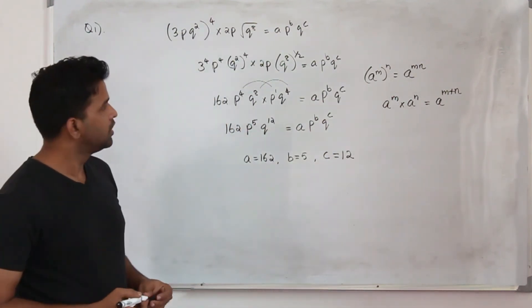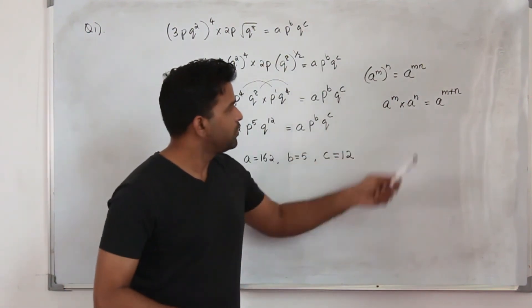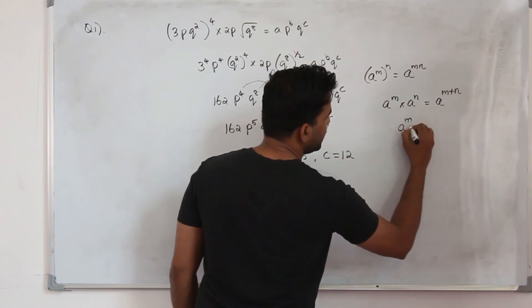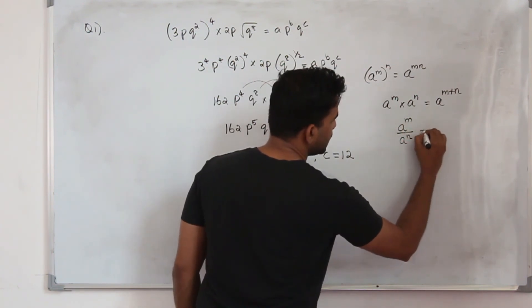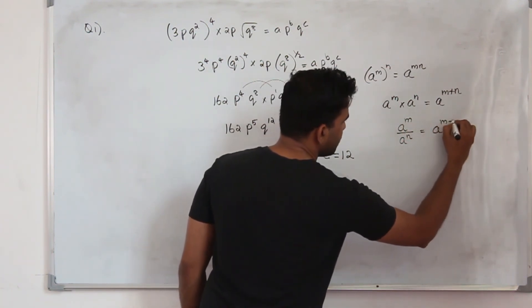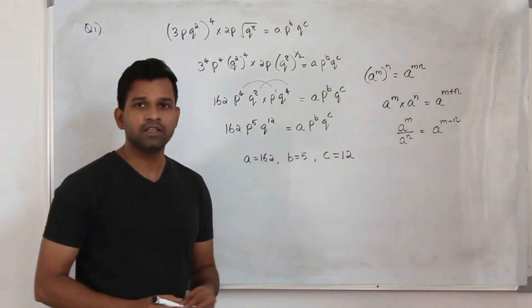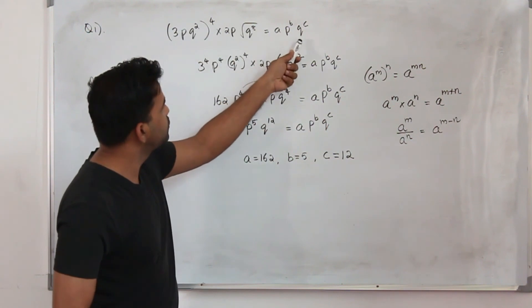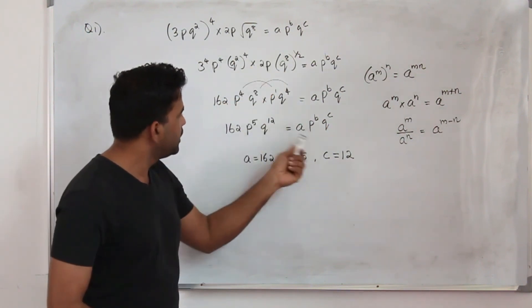That's it. You need to know the laws of indices. If you have two terms that are in division, you can write it as m minus n. You need to learn all these laws of indices. Combine everything, put it in this form, then you can equate them accordingly.